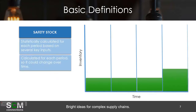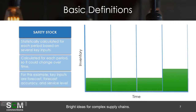Safety stock is a statistically calculated value for each period based on several key inputs. It's calculated for each period, so it could change over time. For this example, key inputs are going to be forecast, forecast accuracy, and service level. In the actual IBP Inventory tool, there's probably 20 or 30 different inputs, but we're trying to keep the example as simple as possible.